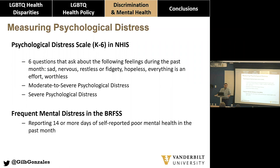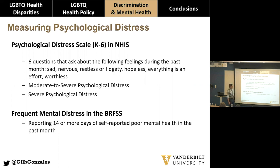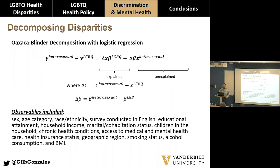I use two CDC surveys with trade-offs. The National Health Interview Survey from 2015 to 2018 is an in-person interview conducted annually — someone comes to your home for about four hours asking questions about health, access to care, and health services utilization. The Behavioral Risk Factor Surveillance System covers the same years — it's a telephone survey that's larger but asks fewer questions. The key advantage of the BRFSS is that we know what state people live in, so we can assess whether state policies influence mental health disparities.